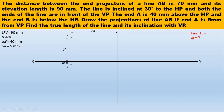Length of front view is given as 90mm, so draw a line parallel to reference line XY. This is nothing but the length of front view: A-dash B-dash-2 equals 90mm. Now point B is below HP, so its front view will lie below reference line XY. Use A-dash B-dash-2 as radius and A-dash as center, and make an arc.